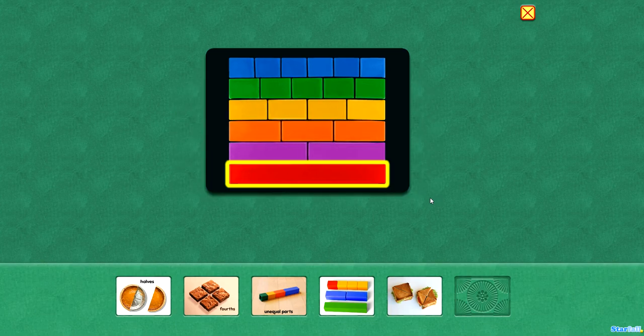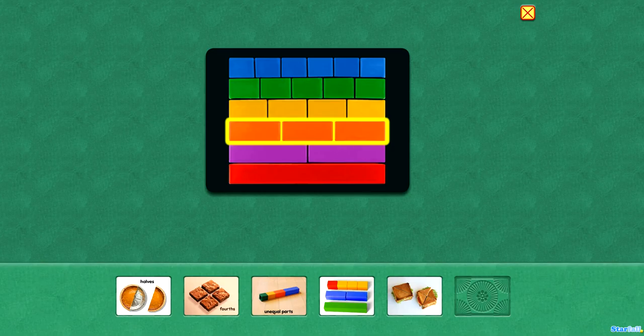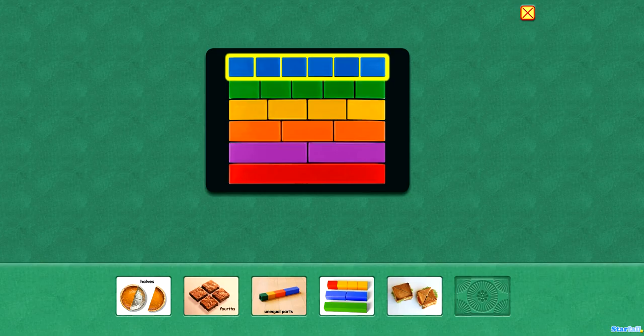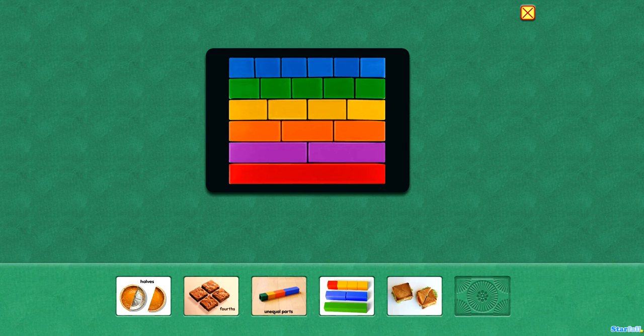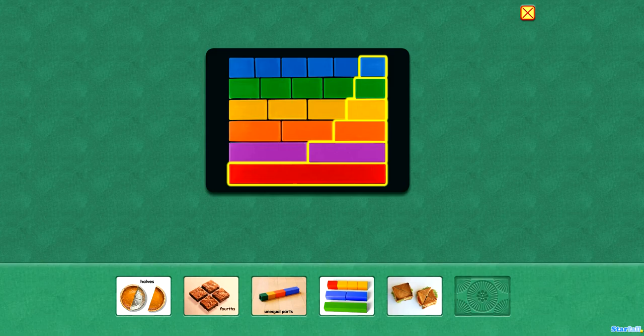One whole, two equal parts, three equal parts, four, five, six equal parts. You can see, as you make more parts, the parts get smaller and smaller.